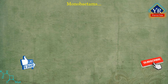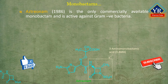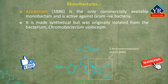On the basis of the novel nucleus, 3-amino monobactamic acid (3-AMA), possessed by these antibiotics, a potent monobactam named aztreonam has been synthesized. Aztreonam is the only commercially available monobactam and is active against gram-negative bacteria; it was approved by the FDA in 1986. Commercial aztreonam is made synthetically but was originally isolated from the bacterium Chromobacterium violaceum.